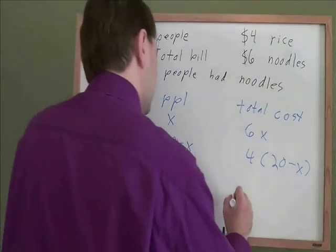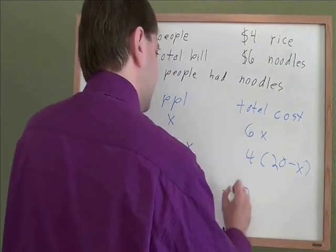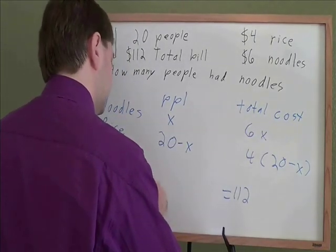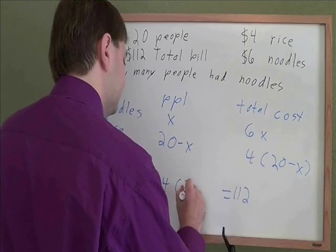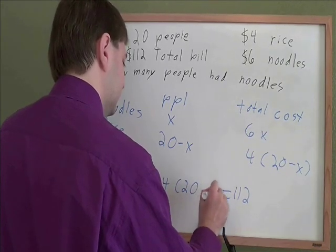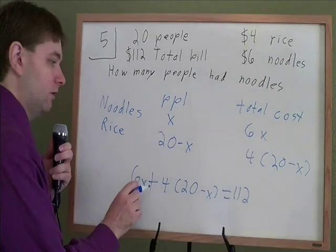And that is almost to our starting equation. Then we just have to know our total bill, that $112. What is that? Well, that's the money spent on noodles plus all the money spent on rice. That gives us our total bill on this problem. So that's our starting equation, and now we have to solve that.